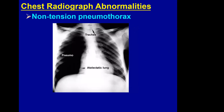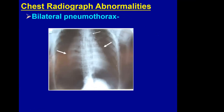Not all pneumothoraces are tension pneumothoraces. Here is a right-sided non-tension pneumothorax — the right lung is entirely collapsed, but the trachea remains centered, confirming it is not a tension pneumo. A pneumothorax can also be bilateral; this radiograph shows both lungs collapsed.